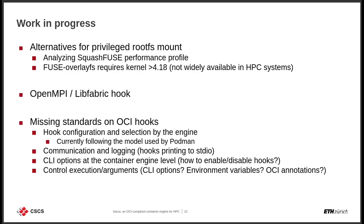We are looking at alternatives for the current privileged rootfs mounts, examining how SquashFS performs at scale. We've identified a number of performance bottlenecks but more work is needed. We've also been looking at fuse overlayFS, but unfortunately that requires a kernel newer than 4.18, which is not always available in HPC systems that typically feature older kernels. We are also working on an OpenMPI libfabric hook, which will give you the ability to deploy not only PMIx-based MPI applications but also OpenMPI applications through the libfabric interface.